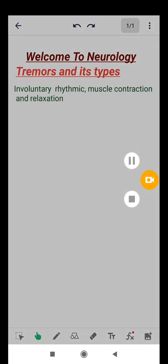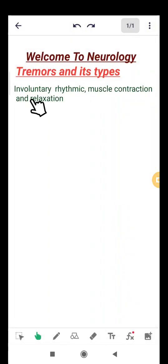Hello guys, welcome to neurology and our topic today is tremors and its types. Tremors are defined as involuntary rhythmic muscle contraction and relaxation of one or more body parts.